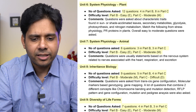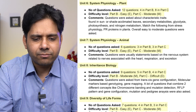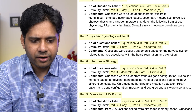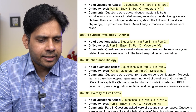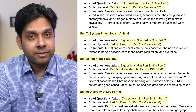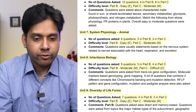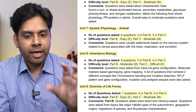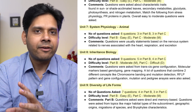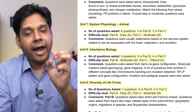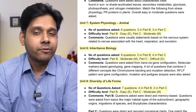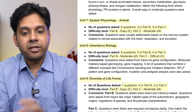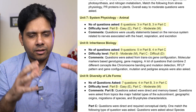Unit 7, Animal Physiology, had six questions — three in Part B and three in Part C. Part B was easy and Part C was moderate. Unit 8, Inheritance Biology, had nine questions in total — five in Part B and four in Part C.